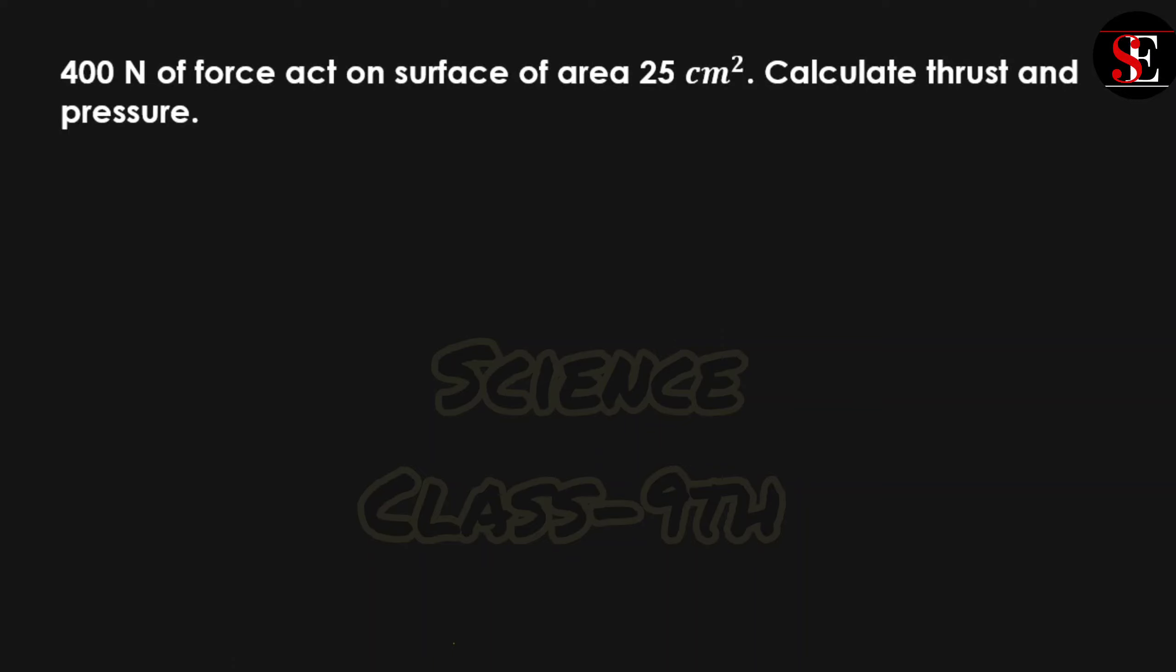400 N of force act on surface of area 25 cm², calculate thrust and pressure. According to this problem, 400 N of force acting on a surface which has area 25 cm², and you have to find out thrust as well as pressure.